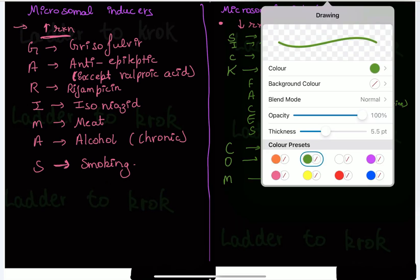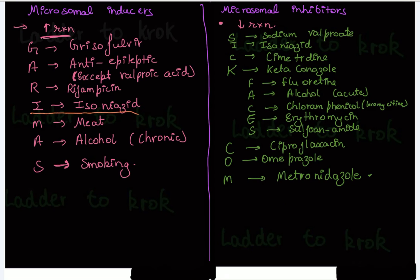You may ask: isoniazid appears in both inducers and inhibitors — so which is it? Isoniazid acts differently depending on the dose and the drug combination. It is more of an inhibitor. So if someone asks for just one answer, say it is an inhibitor. Also remember: in microsomal inducers, all anti-epileptic drugs are included except valproic acid.